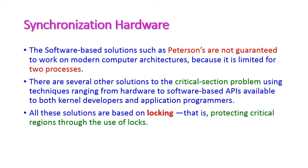In the last class we have seen Peterson's algorithm for solving the critical section problem, and also seen its drawback. Peterson's solution is not suitable for modern computer architecture, hence the number of processes is limited only to two processes.